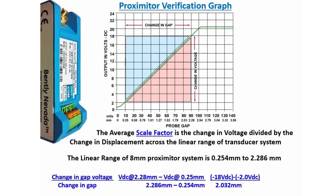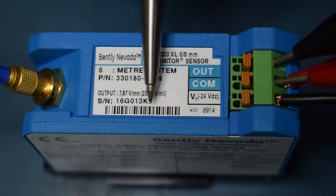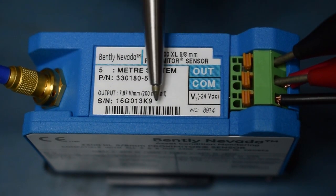So, the average scale factor equals 7.87 volts per millimeter. The average scale factor will be mentioned in the proximeter.